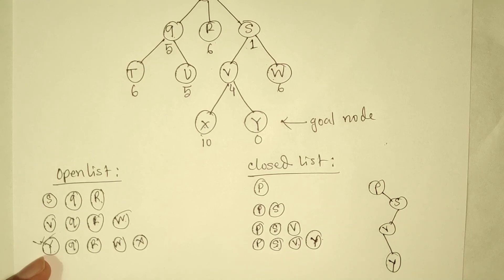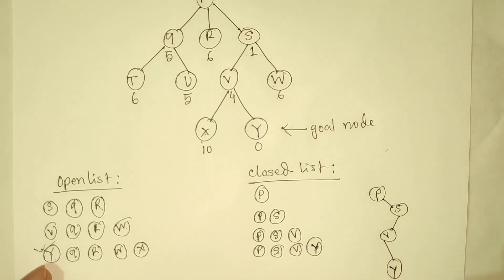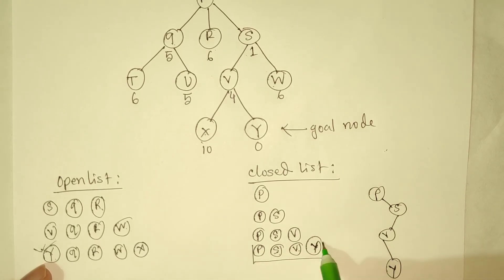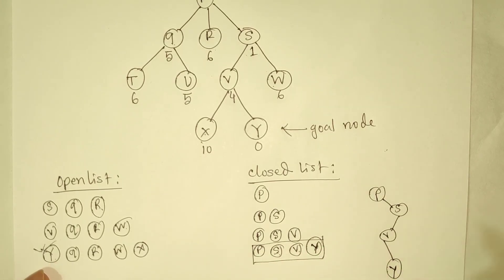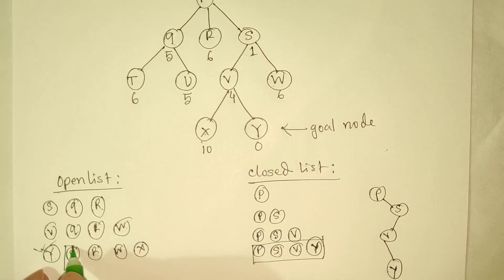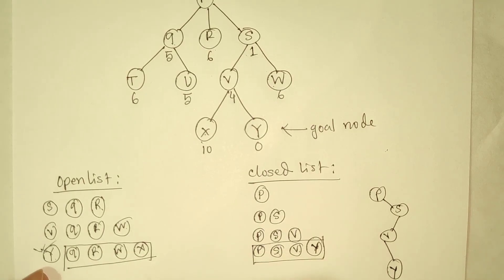The Best First Search algorithm will start from the start node and find the goal node. We will give the close list answer and the open list answer. The open list contains Q, R, W, and X. The close list contains our final path answer P → S → V → Y.